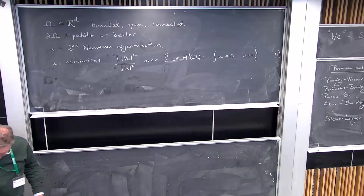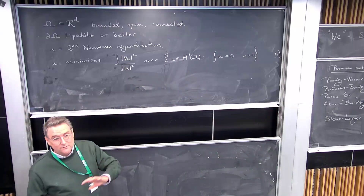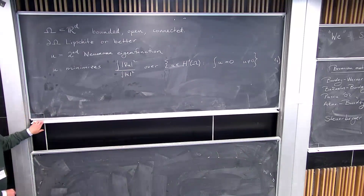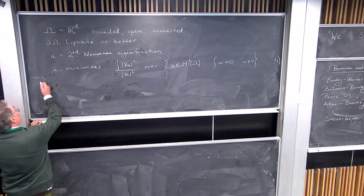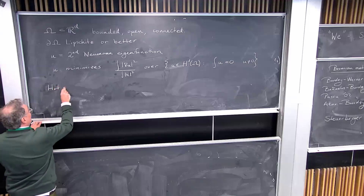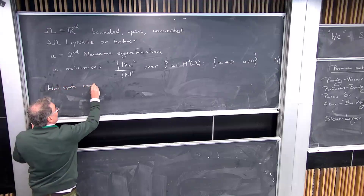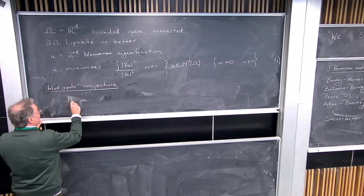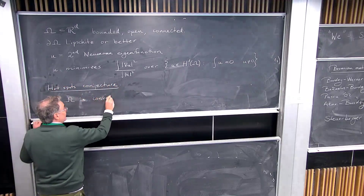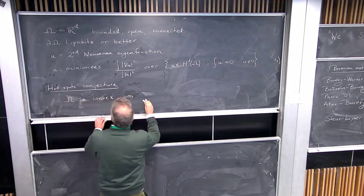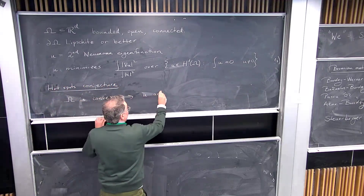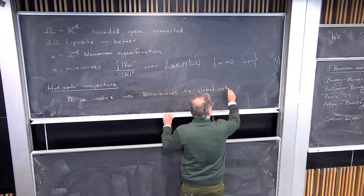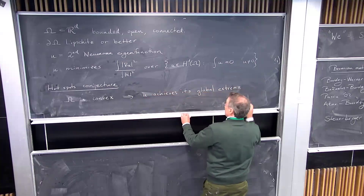The hot spots conjecture can be stated in different ways. One of the variants people are most interested in is: if Omega is convex, then u achieves its global extrema only on the boundary.